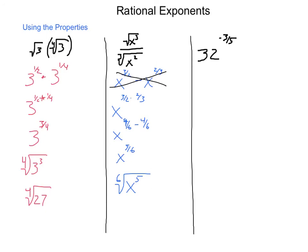Now this is great with variables. How do we do it when we end up with numbers? So what's 32 to the negative 3 fifths power? So I will begin by converting this into radical form.